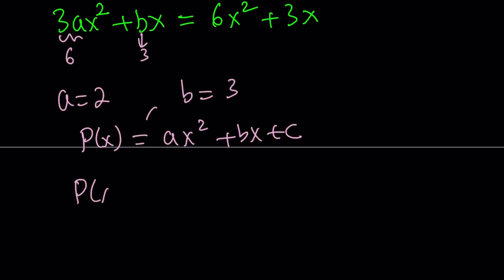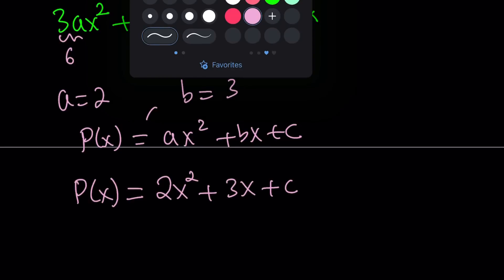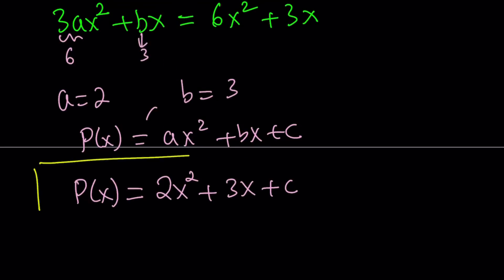Then, this tells us that P of x, which is the solution to our polynomial equation, must be 2x squared plus 3x plus C. Wait a minute. What is C? We don't know what it is. C is totally arbitrary, which means you can't really determine C, or you can just use anything you want for C. C can be 1, C can be negative 1 million. We don't care. C is arbitrary.